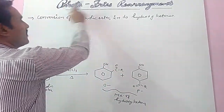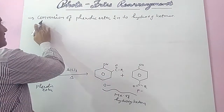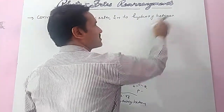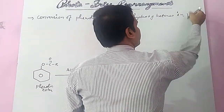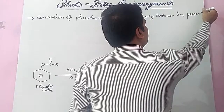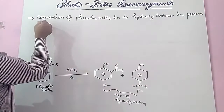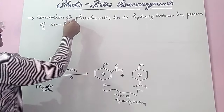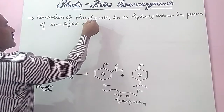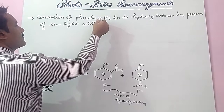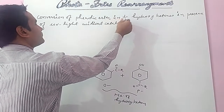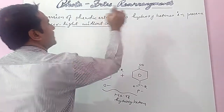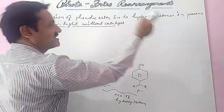But in Photo-Fries rearrangement, a similar reaction occurs — similar conversion of phenolic ester into hydroxy ketones — but in presence of UV light and without catalyst. UV light without catalyst is used, and then it is known as Photo-Fries rearrangement.